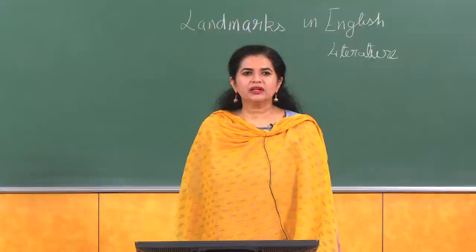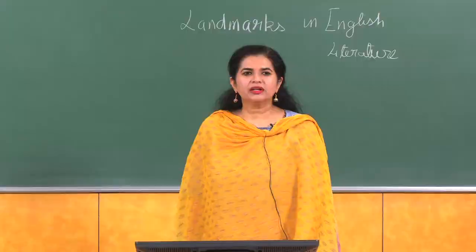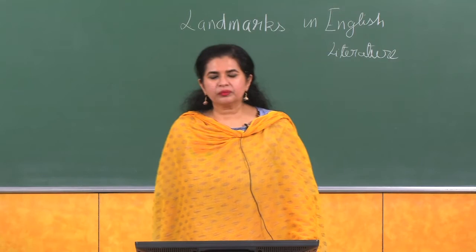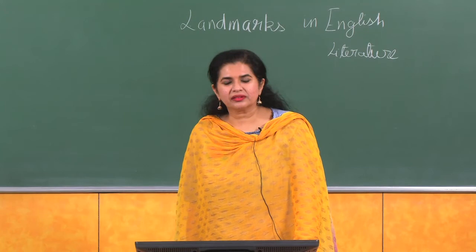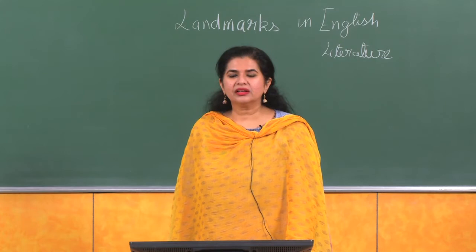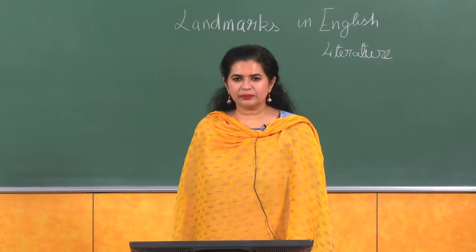Look at some of the keywords here. Remember, in exams you have to look at certain keywords — there might be overlap since so much of literature borrows from the great works by great masters. Look at the language, what time does it denote, look at certain words, and then look at the choices: who could be the speaker? Options are Tiresias, Zeus, Apollo, Delphic Oracle, Greek mythology.